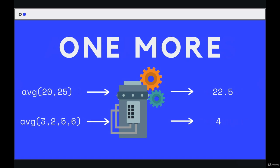Here's another example: a hypothetical function called average. It takes multiple arguments — two, or four, maybe ten — and the output will be the average. So it will sum them all together and then divide by the number of inputs. So 20 plus 25 divided by two gives 22.5. Those four numbers divided by four gives us four.